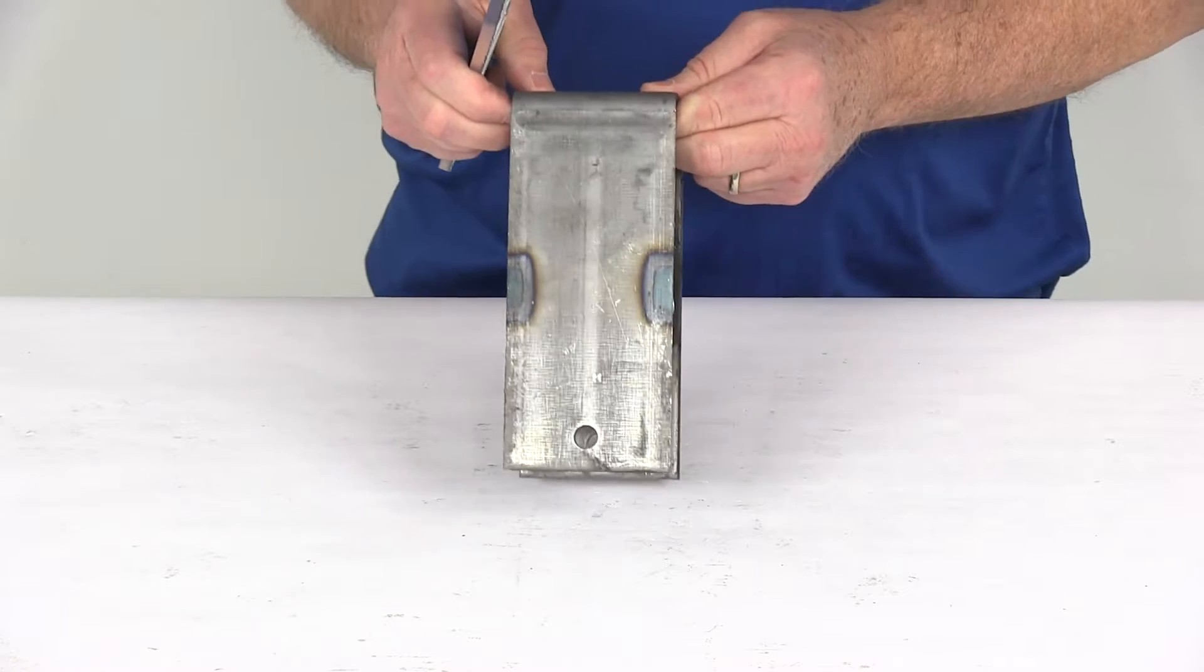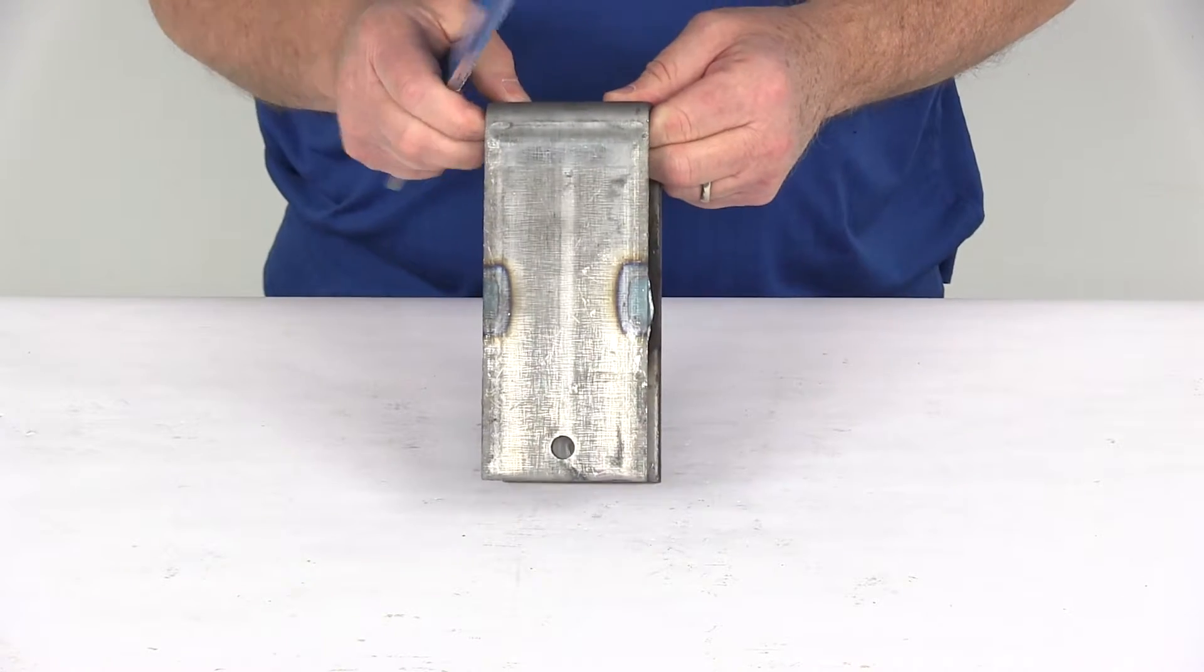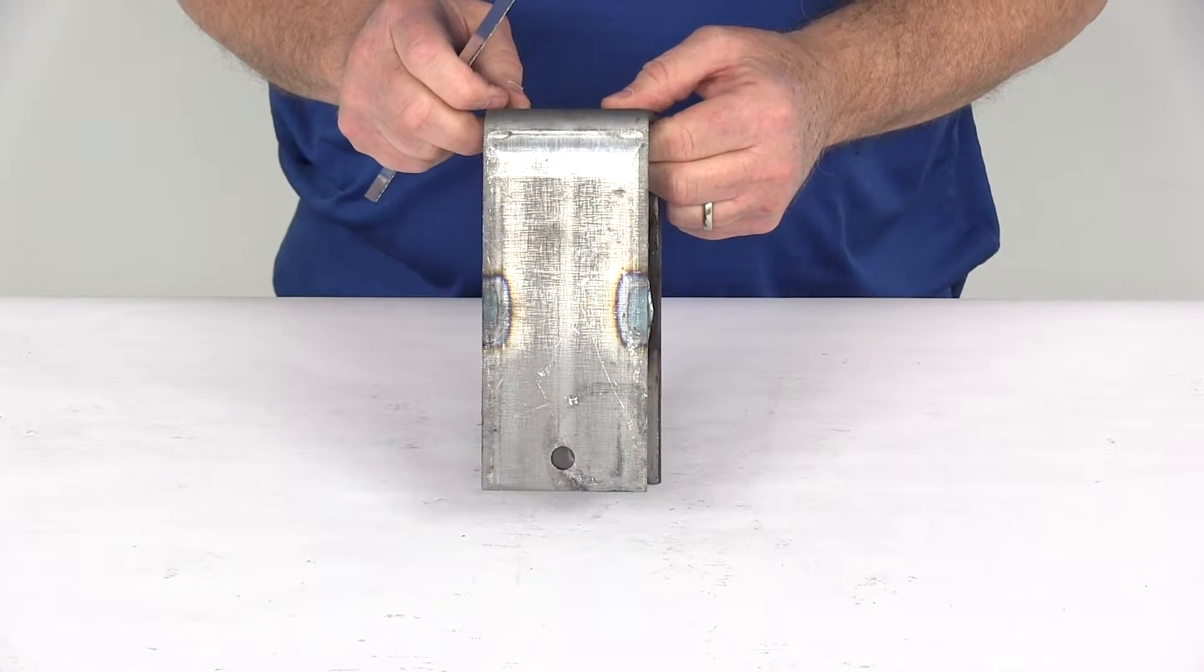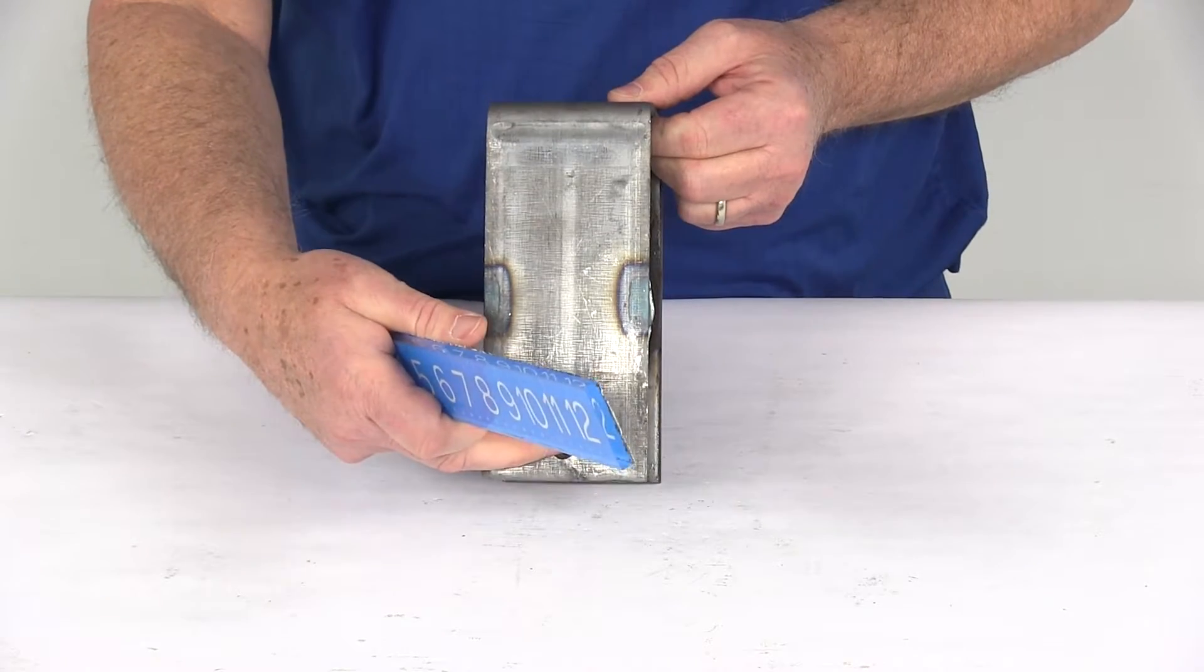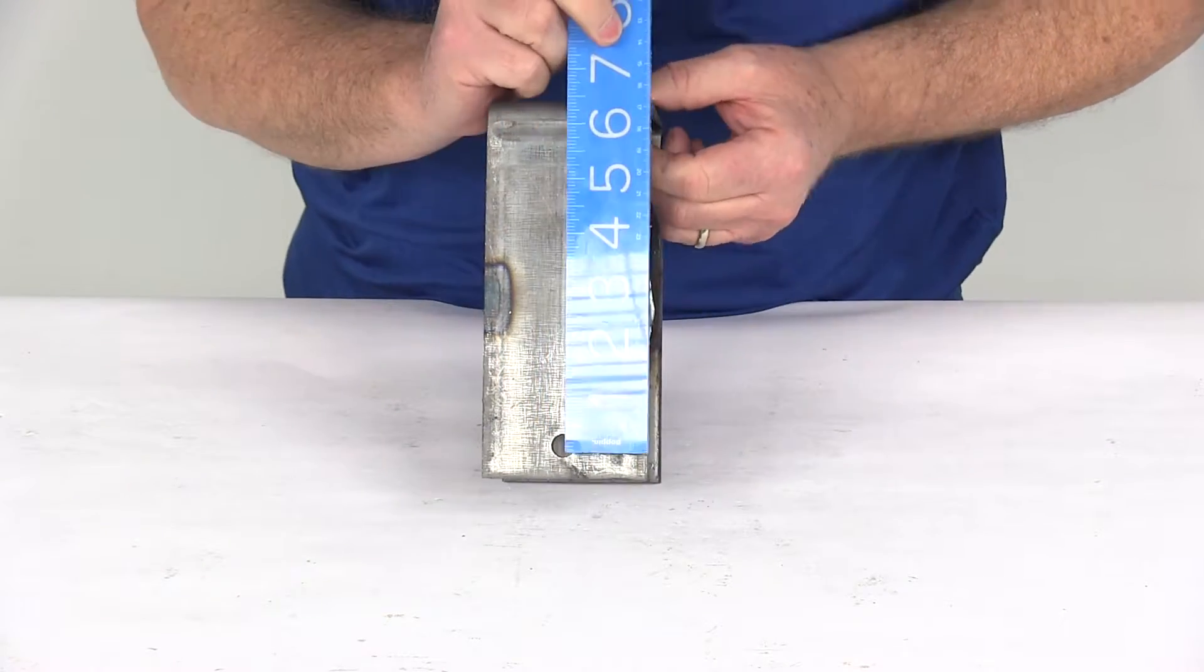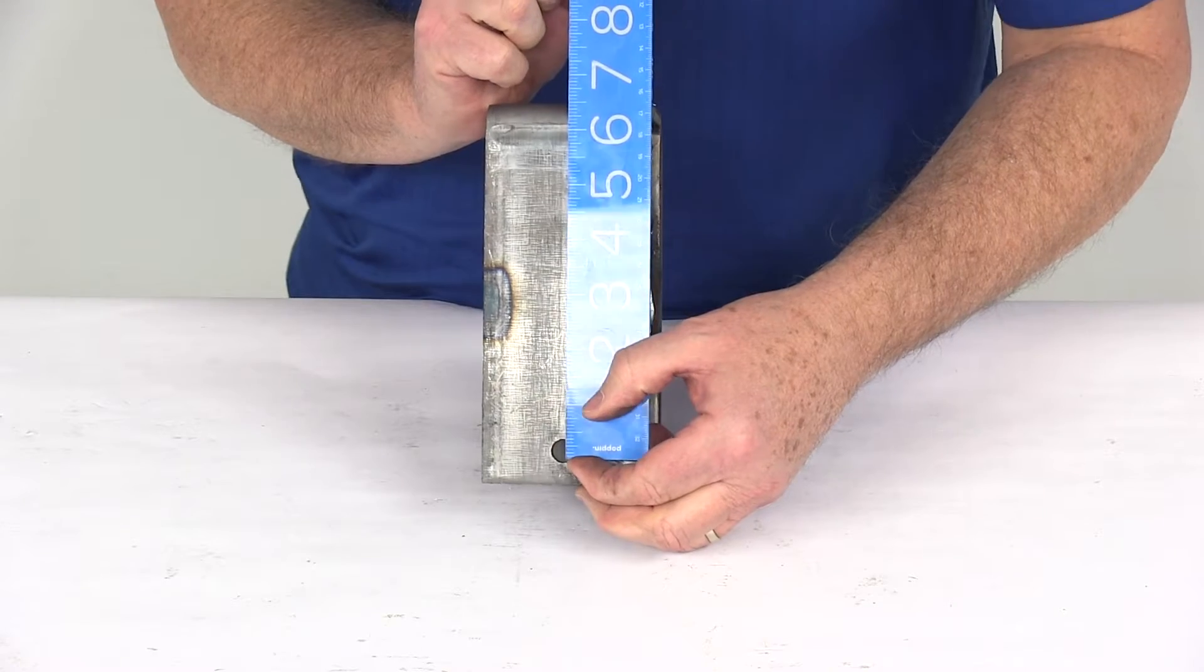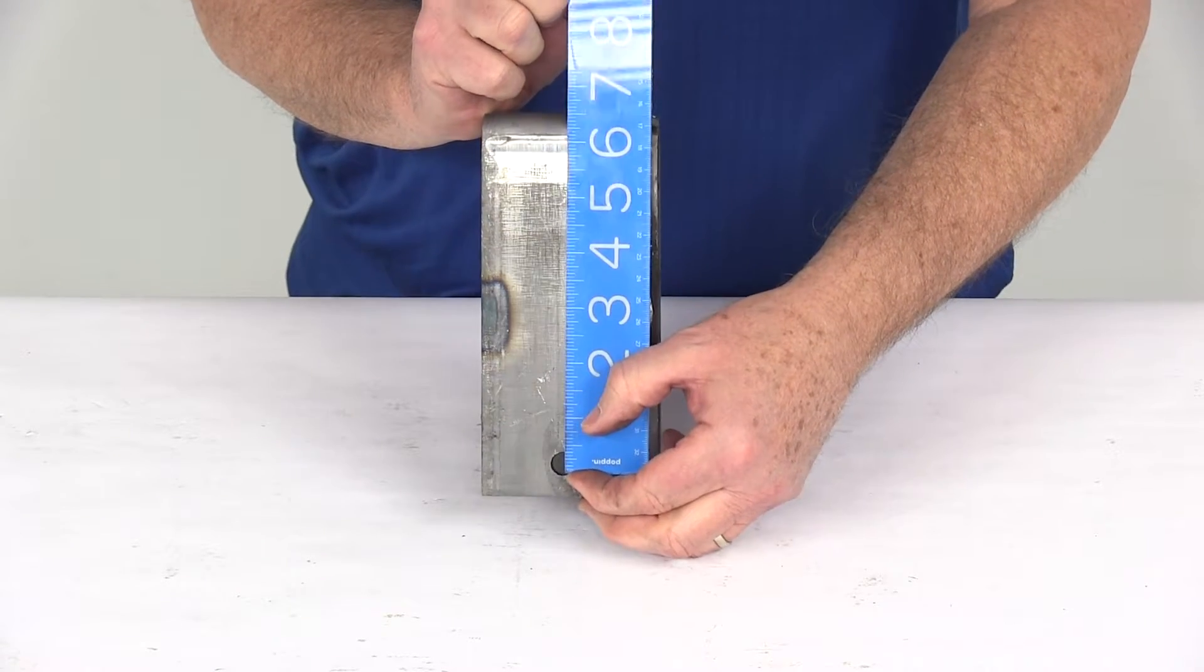And usually when they label the height on a hanger, the measurement they give, like in this case it's saying it's a 6 and 3 eighths inch tall, that measurement is from the center of the bolt hole to the top of the hanger. So if we go center to top, then you can see it's the 6 and 3 eighths inches tall.